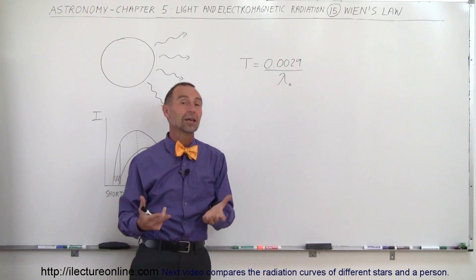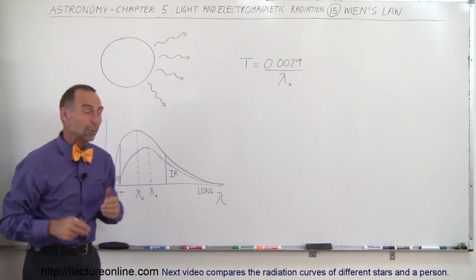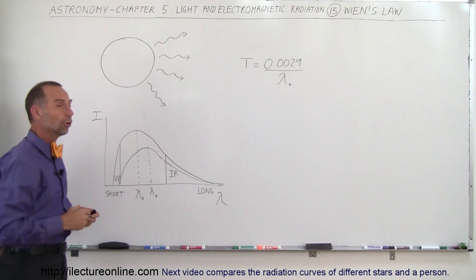The constant here had to be experimentally derived. Now, we'll show you an example of how that works in just a moment, but let's take a look at what we call the radiation curve.